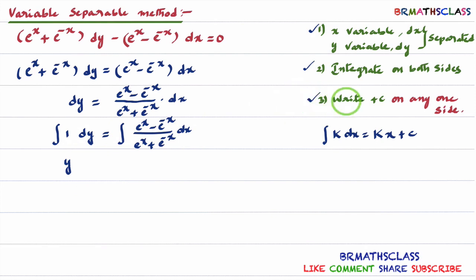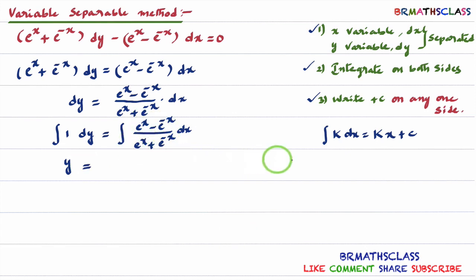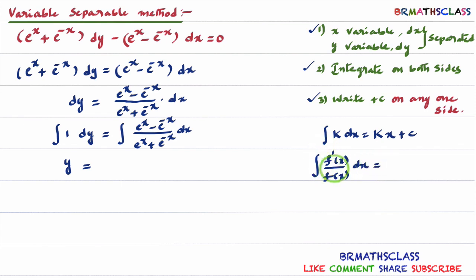In step 3, we write plus c on any one side. If you write plus c on both sides, there is a chance you will confuse and cancel both. We know this formula in integration: integral of f dash of x divided by f of x dx equals log mod f of x plus c. This we learn from integration by substitution method.